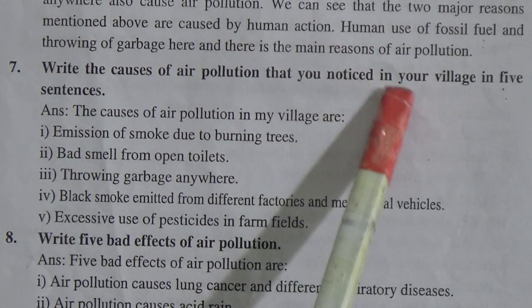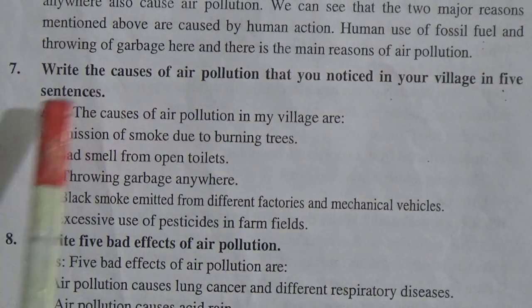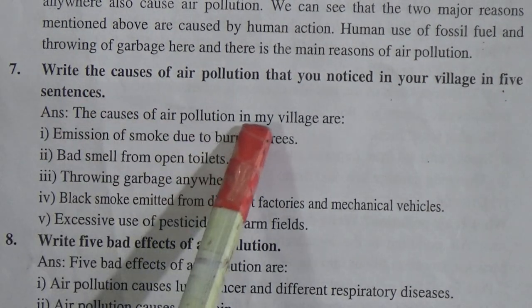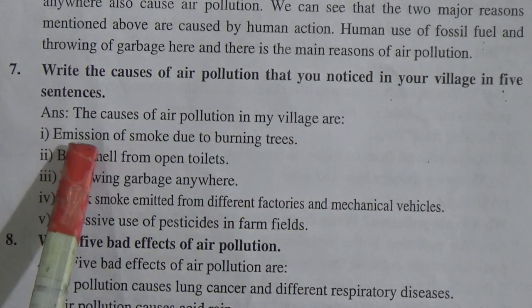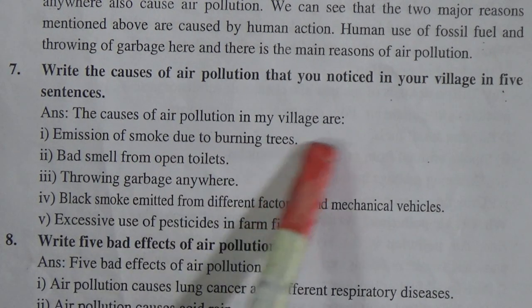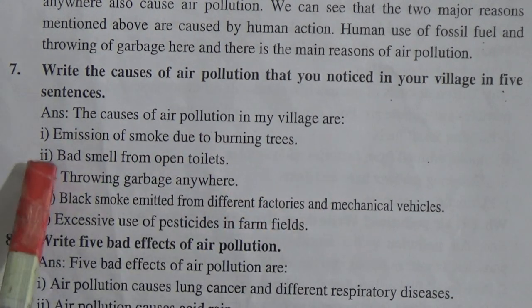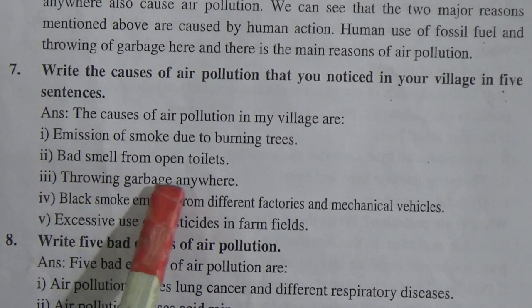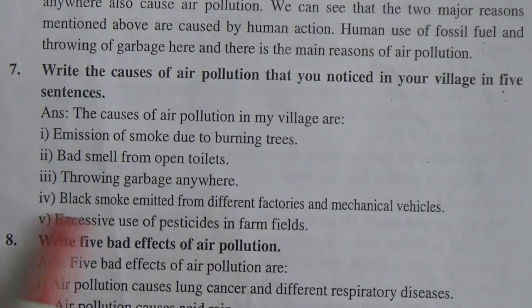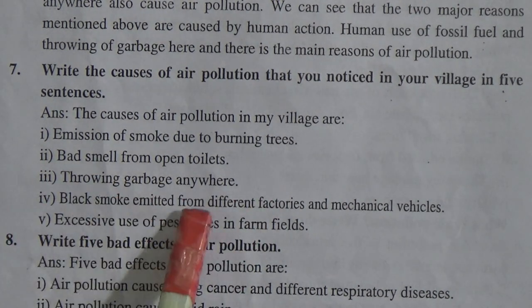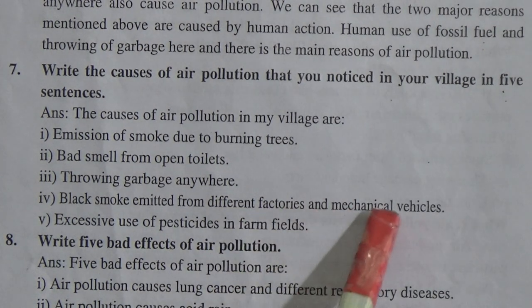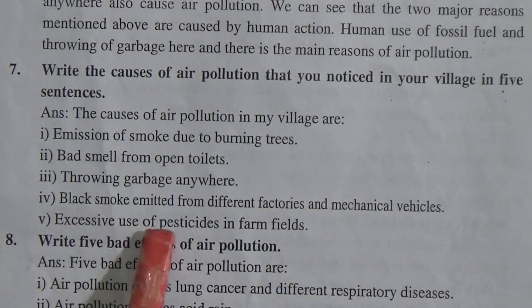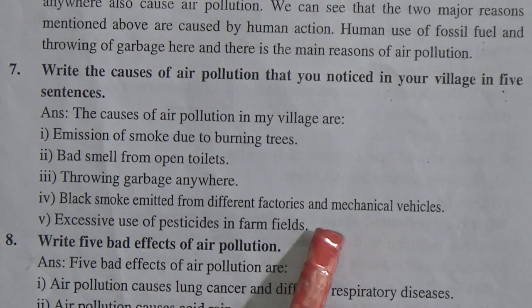Question number seven: Write the causes of air pollution that you noticed in your village in five sentences. The answer is: first, emission of smoke due to burning trees; second, bad smell from open toilets; third, throwing garbage anywhere; fourth, black smoke emitted from different factories and mechanical vehicles; and fifth, excessive use of pesticides in farm fields.